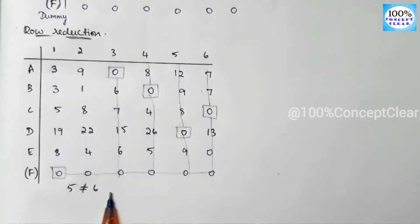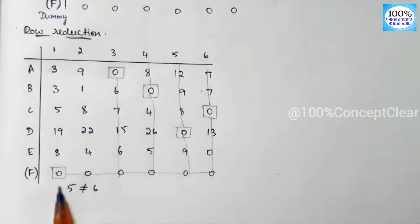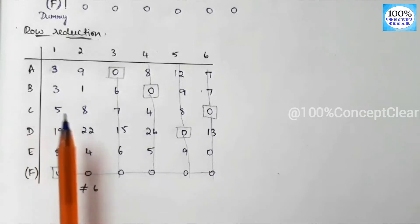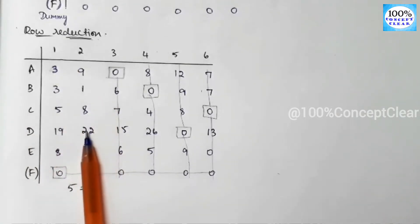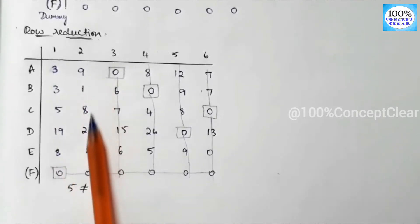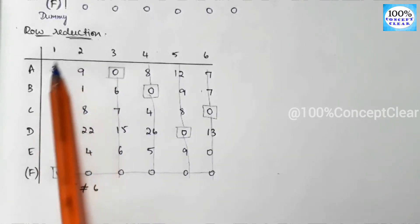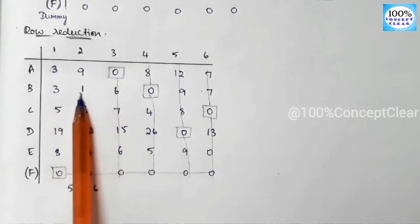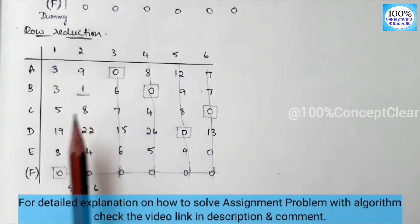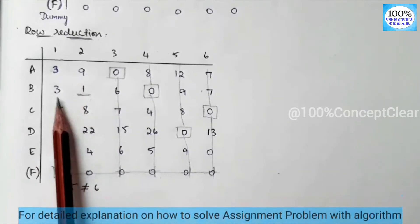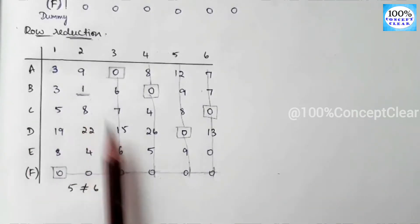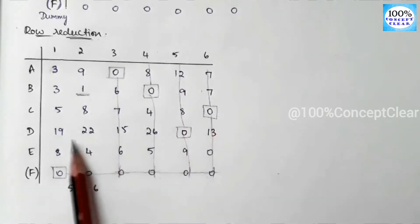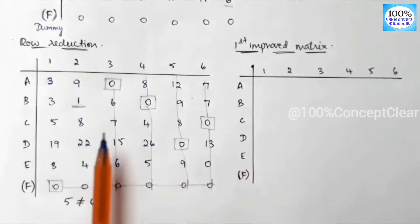Since 5 ≠ 6, we proceed to create the first improved matrix. We identify the uncovered cells (not covered by any line) and choose the minimum value among them — the minimum is 1. We subtract 1 from all uncovered elements, add 1 to all intersection points (cells covered by two lines), and copy the covered elements as-is to create the first improved matrix.